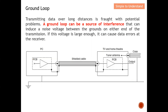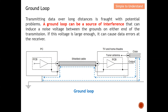Let's start by understanding how a ground loop can actually be created. This is a very simple diagram to illustrate how we can create a ground loop without knowing it. When we actually transmit data over a long distance, there are potential issues — a ground loop can be a source of interference that can induce a noise voltage between the ground on either end of the transmission. If this voltage is large enough, it can actually cause data errors at the receiver.